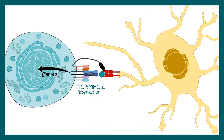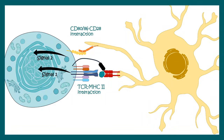There are other receptors present in T cells, such as CD28, which is a co-stimulatory receptor. It interacts with the CD80 or CD86 receptors on the dendritic cell, and this interaction gives signal 2 for activation.